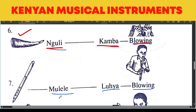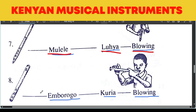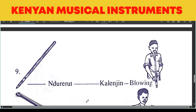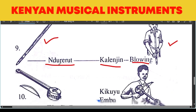Then we have Mulele. Mulele is from the Luyia, played by blowing. It's also a flute. We also have Mulele from the Kuriya people. By the way, the Kuriya are very rich in musical instruments. Mulele is also a flute, played by blowing. Let's look at Ndure from the Karangin, played by blowing. That's the position — this is another flute.